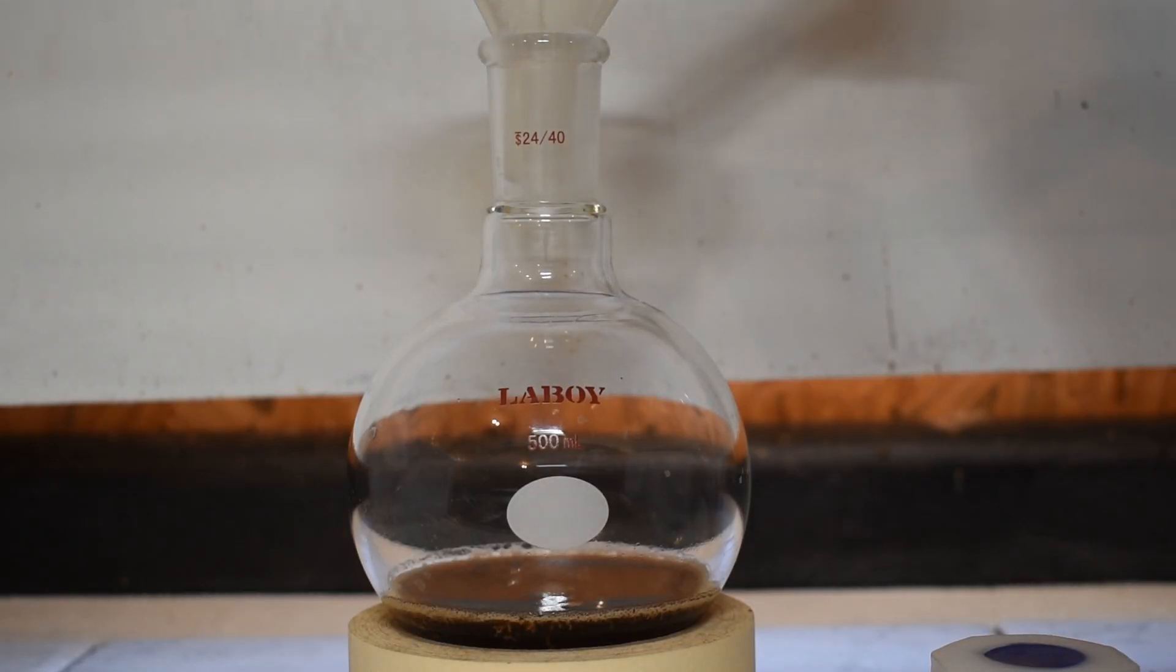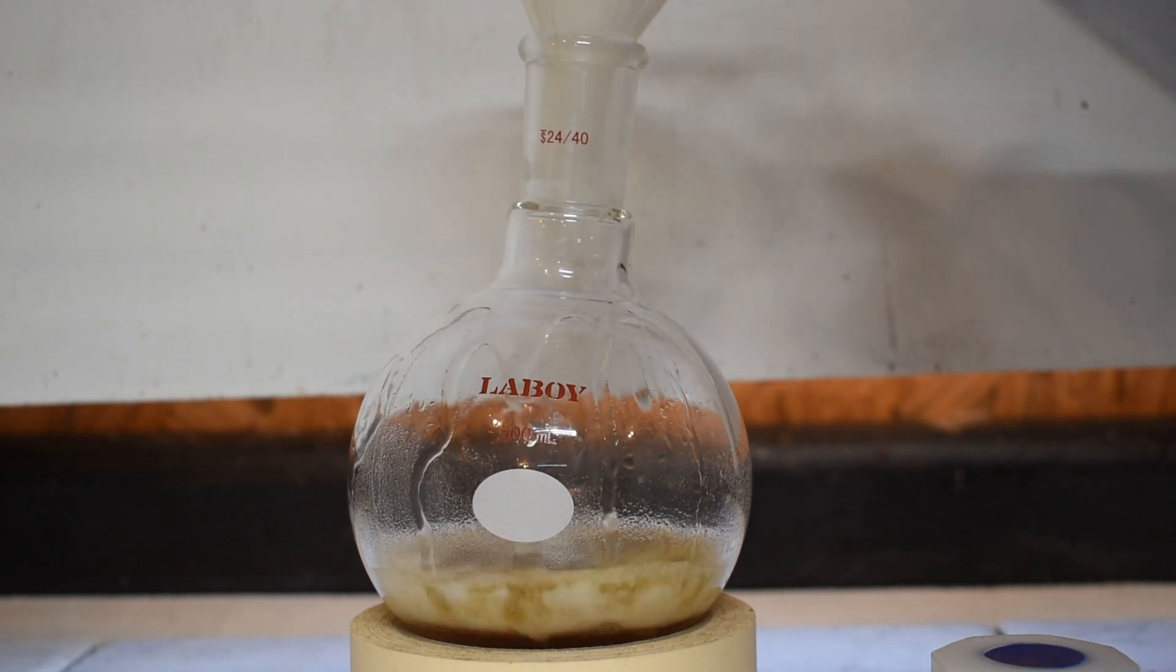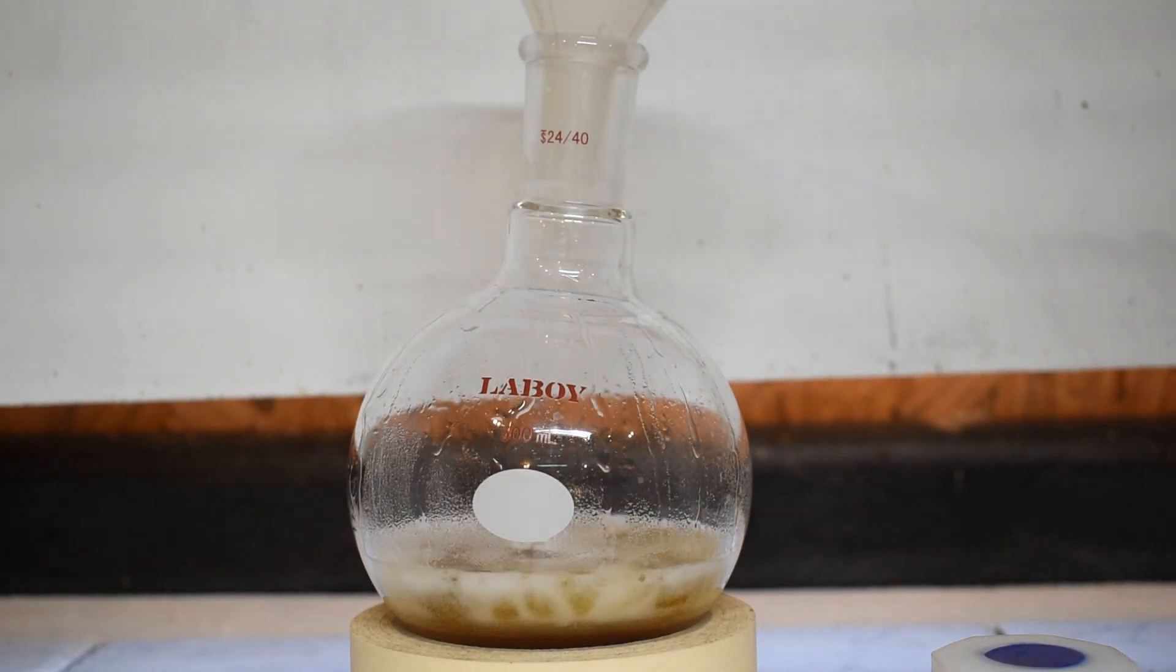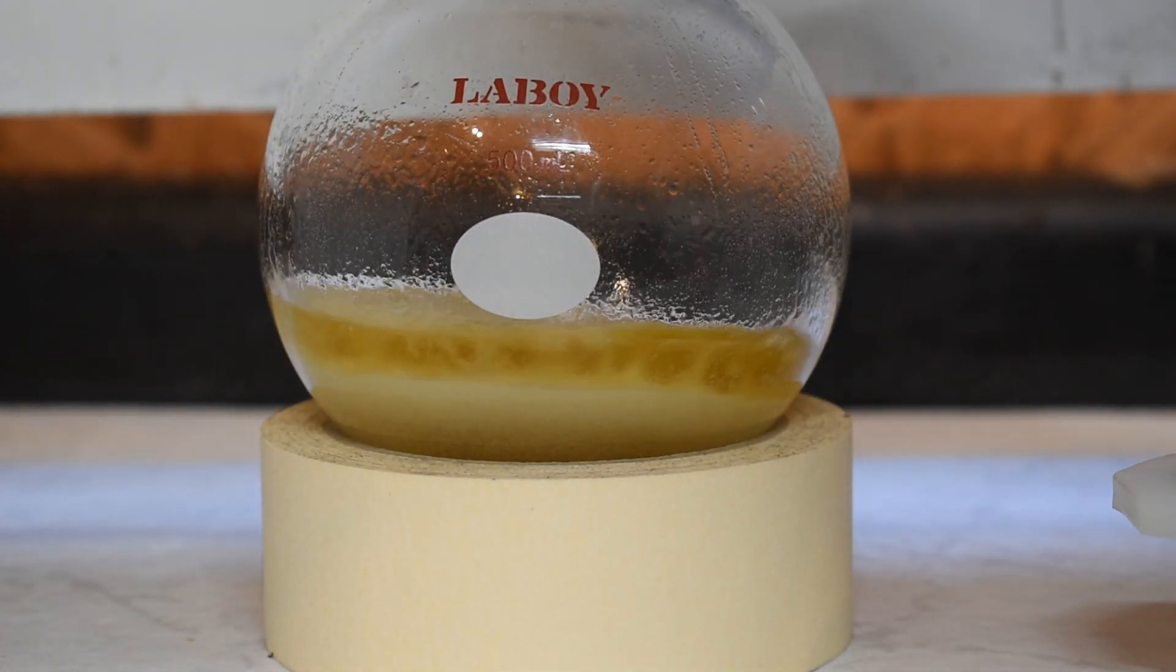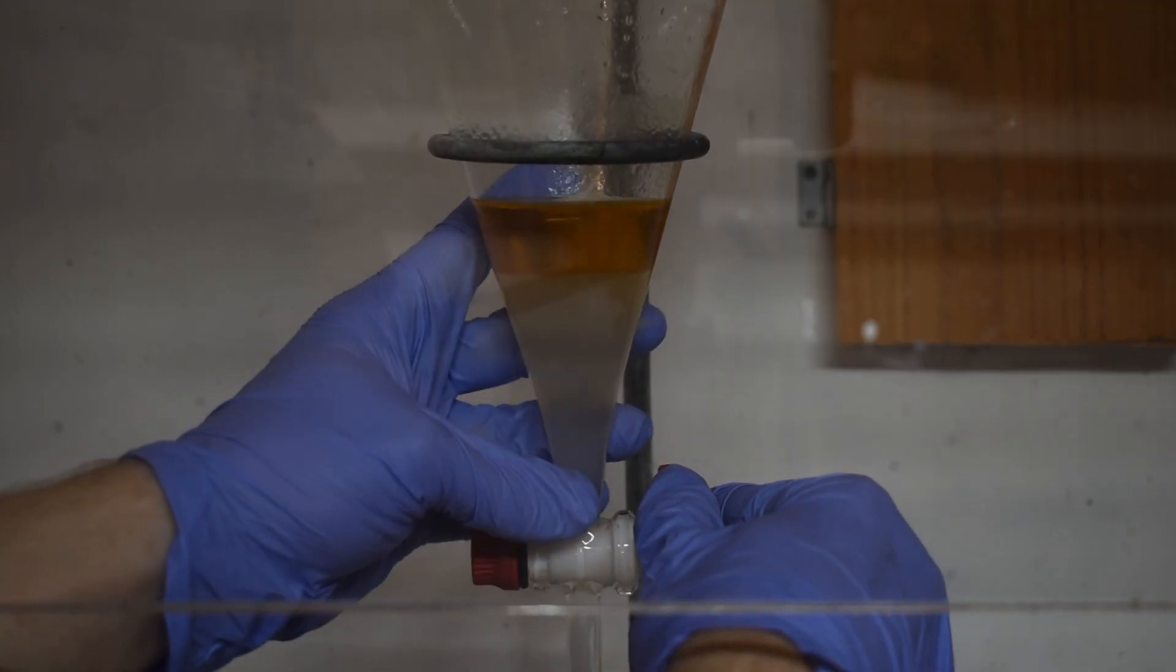After the reflux was complete, I added some baking soda to the mixture to neutralize any leftover acids, and I also added some water as well. The water should help dissolve any leftover acetic acid as well as sulfuric acid, and it will also dissolve any chunks of sodium bicarbonate left over from the reaction. I then transferred this mixture to a separatory funnel and filtered off the bottom layer.